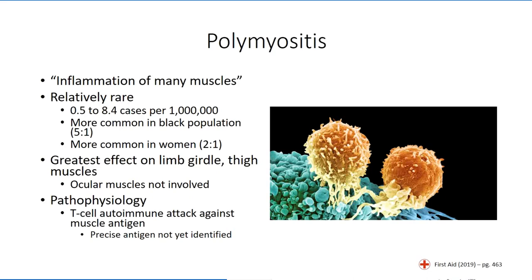The condition is also more common in the black population and in women when compared to men. The precise cause of polymyositis is not fully understood, but it is an autoimmune response that may be triggered in susceptible individuals by such causative agents as viral infections or malignancies. Evidence suggests that the condition starts as a T-cell mediated attack against an as-of-yet unidentified antigen.